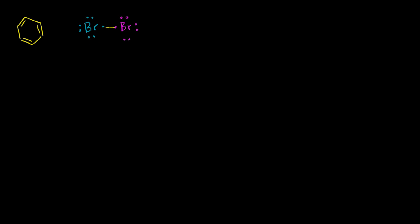Let's say we have some iron bromide in our mix as well. This is going to catalyze the reaction. Iron is bonded to three bromines. The bromine molecules are much more electronegative than the iron, so even though these look like fair covalent bonds, the bromines are hogging the electrons. The iron would have an oxidation number of three, and it will have a slightly positive charge because the electrons are being hogged away from it.